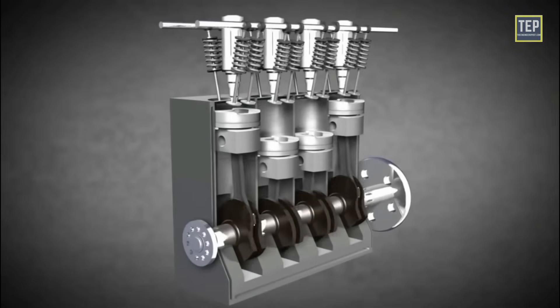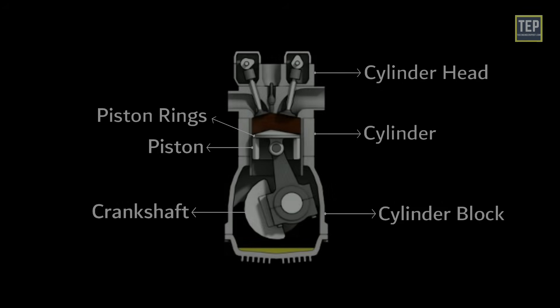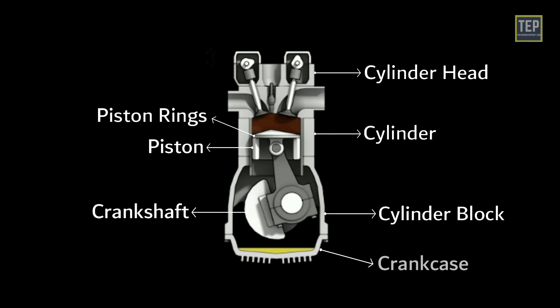The crankshaft is a mechanical component used in a piston engine to convert reciprocating motion into rotational motion. The crankcase is the main housing at the bottom of the engine, providing support for the cylinder and crankshaft bearings.